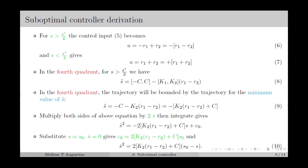Next, we derive the convergence criterion for the suboptimal controller to ensure stability. For S greater than S-star over 2, the control input with the suboptimal SMC results in equation number 6, and for S less than S-star over 2, the control input is as given in equation number 7. The control input switches between these two values. In the fourth quadrant, for S greater than S-star over 2, the control input results in equation number 8, and the state trajectory is bounded by the trajectory for the minimum value of s-double-dot, corresponding to equation number 9.